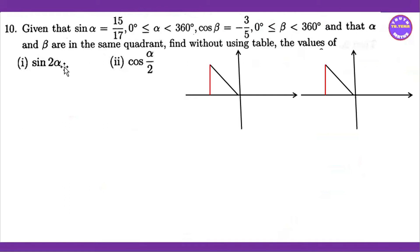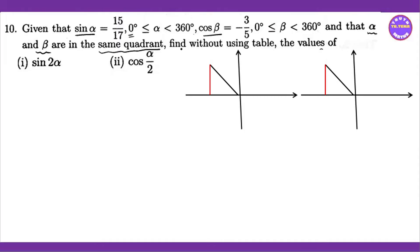We are going to do exercise 10.2, number 10. The problem states that sin alpha is equal to a given value, and alpha and another angle are in the same quadrant. Without using tables, we need to find the value of the required trigonometric expressions.